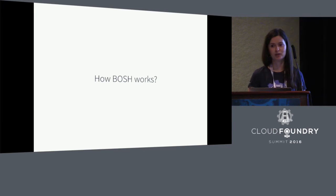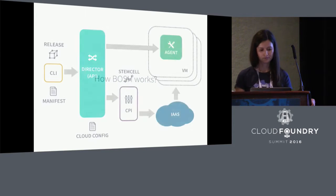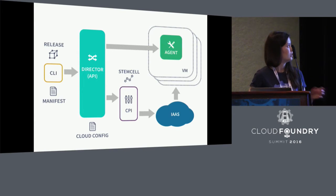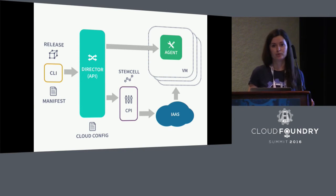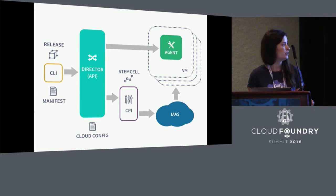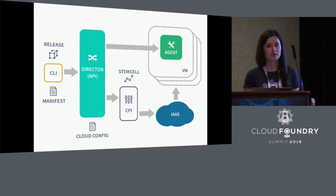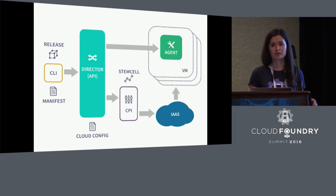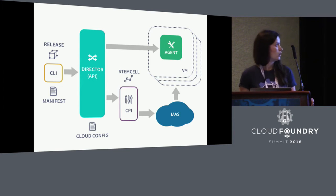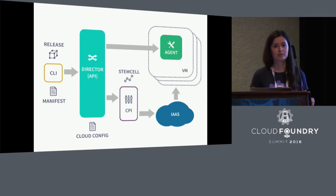Let's quickly take a look at how BOSH works. The main BOSH component is the Director. Director exposes a RESTful API that allows you to manage your deployments, manage your releases, get the current state of your deployment, and perform other administrative tasks. You configure the Director with the cloud config, which contains your cloud provider properties that define types of resources your deployments can use, like networks, VM types, and disks. Director interacts with cloud providers via something we call the cloud provider interface, or CPI.